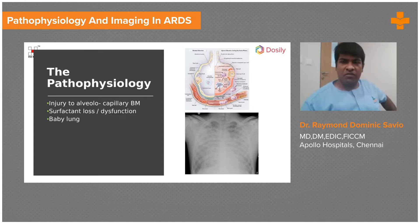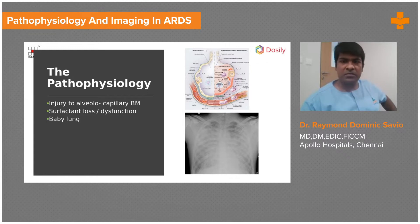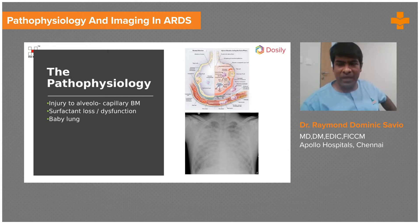One of the major hallmarks of ARDS is damage to this alveolo-capillary basement membrane. What happens is there is a whole lot of flooding of inflammatory material into the interstitium and into the alveolus — it's flooded with proteinaceous material and inflammatory substances. Within the capillaries you also see microthrombi forming, accumulation of blood cells, and a lot of capillary leak happening.